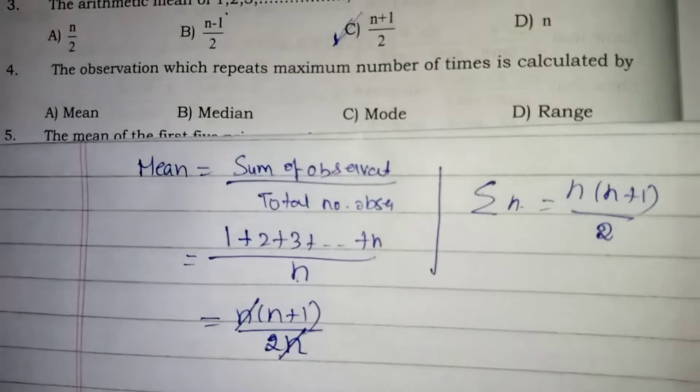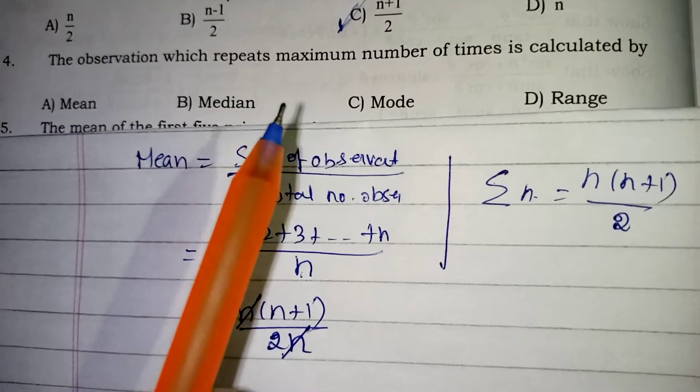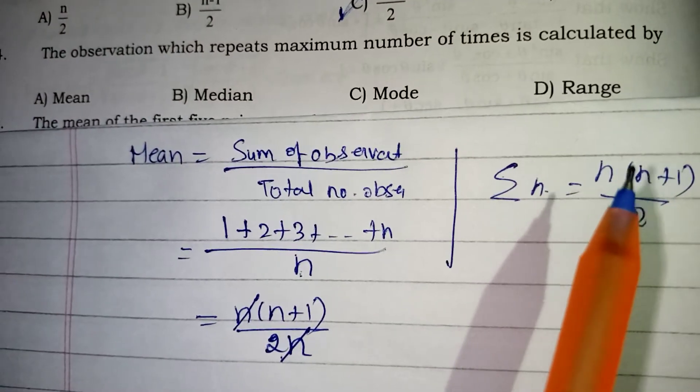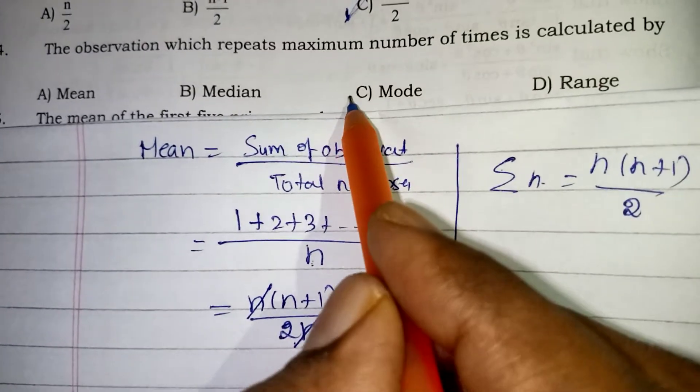Next question. The observation which repeats maximum number of times is calculated by what? That is a question. So which is repeated more times that is called mode. Mode is your correct answer.